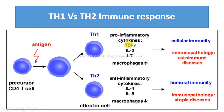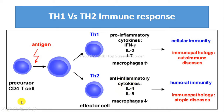Th1 immune response activates macrophages, CD8 T cells, IgG B cells, interferon, and CD4 T cells. Th2 cells activate mast cells, eosinophils, dendritic cells, and others.